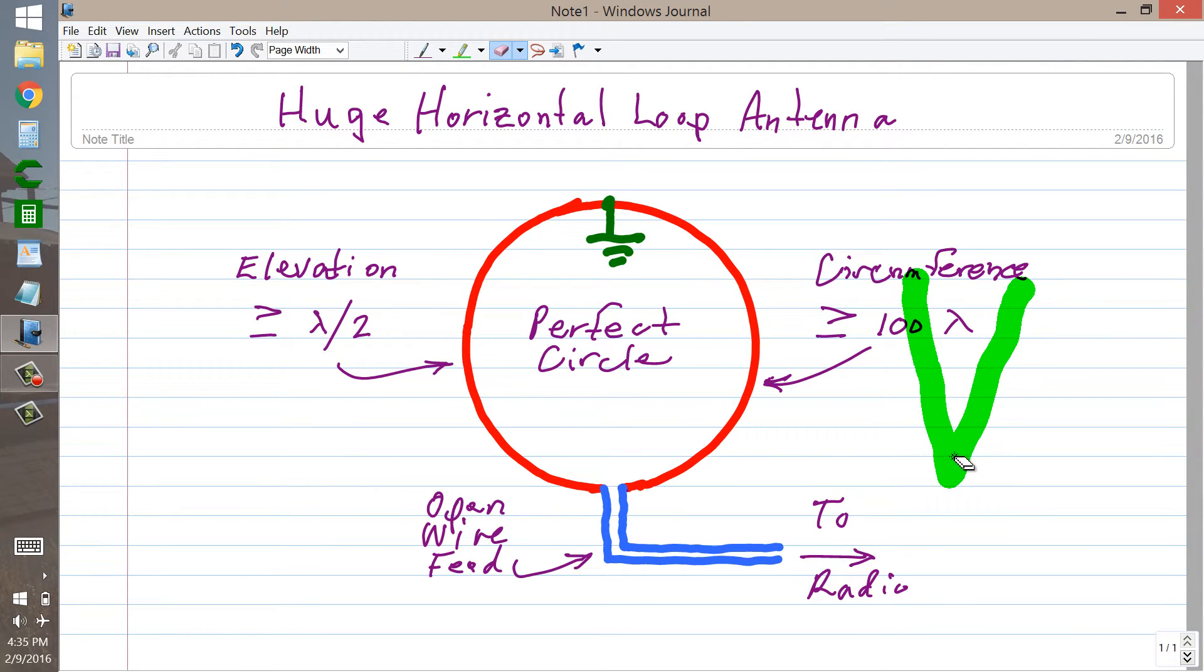Here to describe an antenna that I would love to try someday on the HF bands somewhere between 3 and 30 MHz. We might say let's try this for the 7 MHz band.